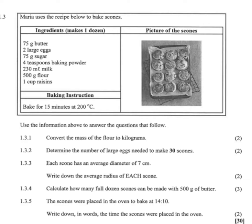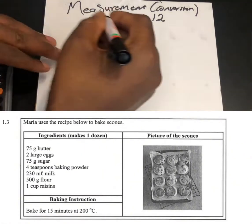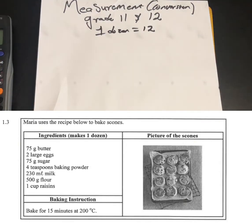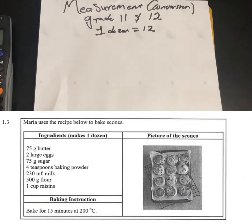The question says that Maria uses the receipt below to bake scones. The ingredient makes one dozen, which is the same as 12. The ingredients are: 75 gram butter, two large eggs, 75 gram sugar, four teaspoon baking powder, 230 milliliter of milk, 500 gram of flour, one cup of raisins. The scones must be baked for 15 minutes at 200 degrees Celsius.